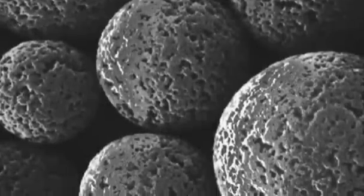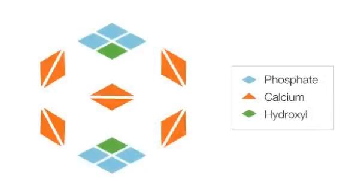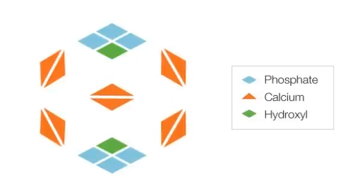CHT is a spherical macroporous form of hydroxyapatite. It is a mixed-mode support with functional groups consisting of pairs of positively charged crystal calcium ions, or C-sites, and clusters of six negatively charged oxygen atoms associated with triplets of crystal phosphates, or P-sites.